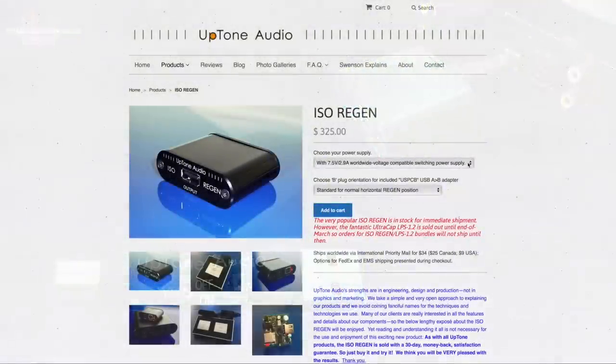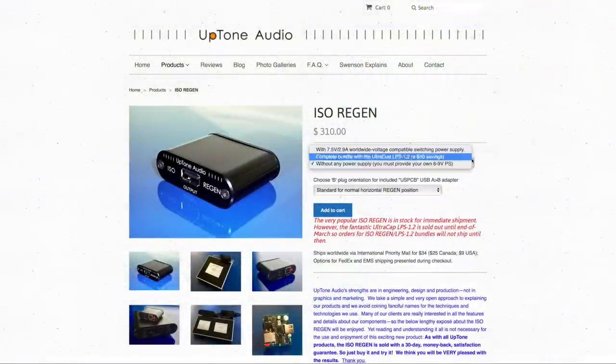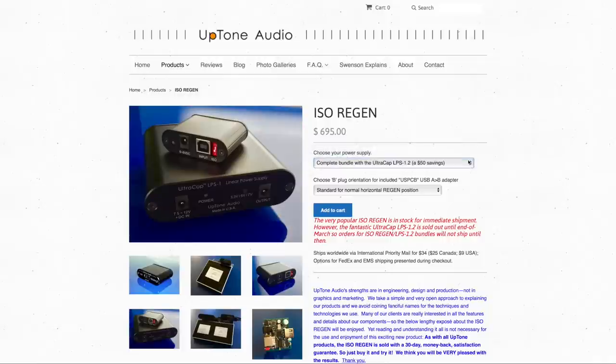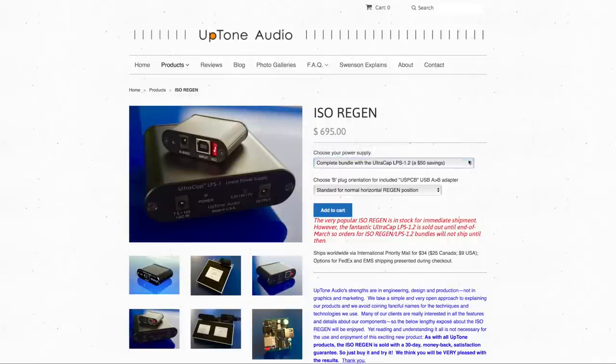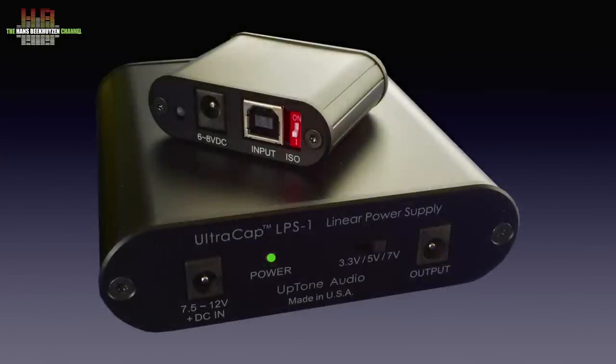On ordering you now have the choice of a standard switch mode power supply, no power supply or the new Ultra Caps 1.2 power supply that now supports 5, 7, 9 and 12 volts DC. My Ultra Caps power supply version 1 does 3.5, 5 and 7 volts but since the ISO Regen is satisfied with 6 to 8 volts, that was sufficient.